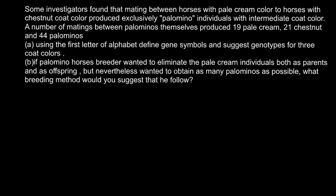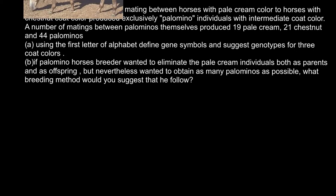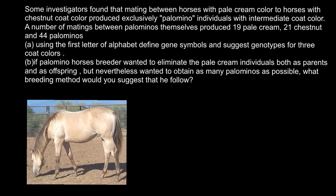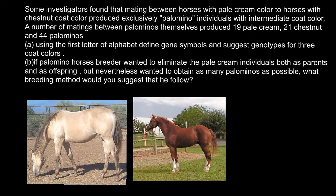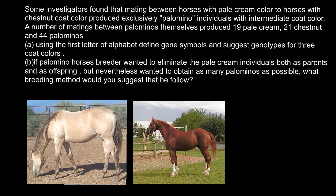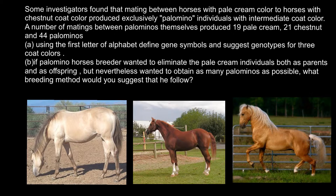There are two questions. Question A: using the first letter of the alphabet, define gene symbols and suggest genotypes for the three coat colors. First, I want to show you these coat colors. The first one is pale cream — this is a horse. The second color is chestnut. And the last is Palomino — this is the color of the horse we call Palomino.